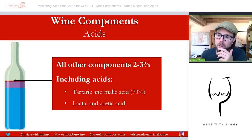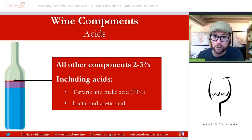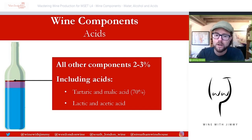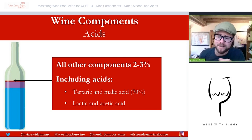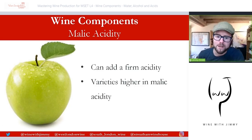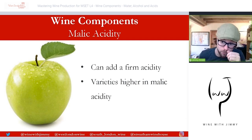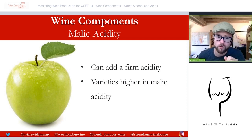Other acids such as lactic and acetic are produced during fermentation or the malolactic conversion process. Water and alcohol account for around 97–98% of wine, with these other compounds — including flavors, aromas, acids, and tannins — making up two to three percent. Tartaric is the major acidity found in wine. Individual acid levels can greatly affect the taste of wine.